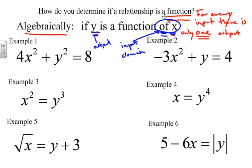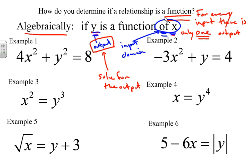Thinking back to algebra 1 or 8th grade math, to determine a function algebraically we look to isolate the expression into a function. We generally do this by isolating one of the variables — and we always isolate the output. So we solve for the output. If we can solve for the output and we only get one output for every input, we have a function.